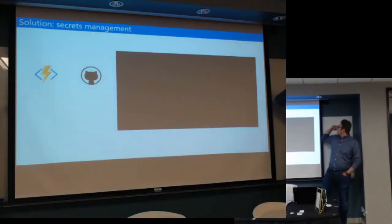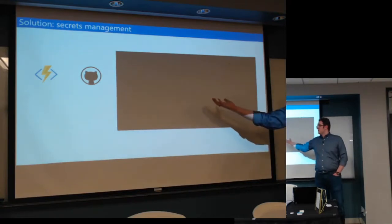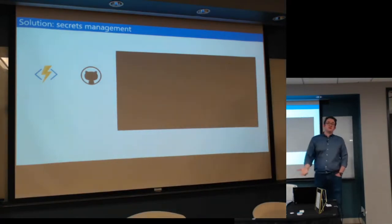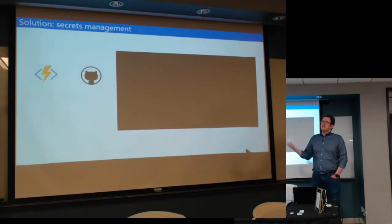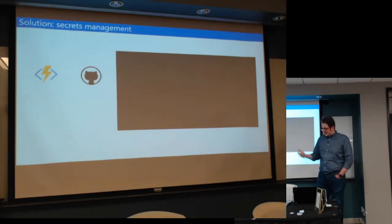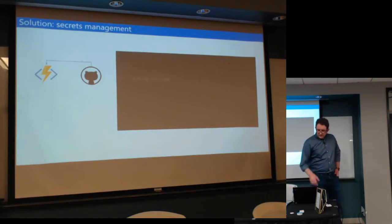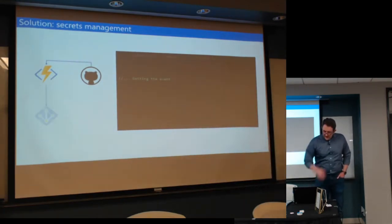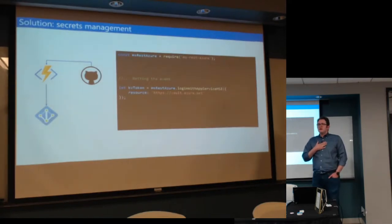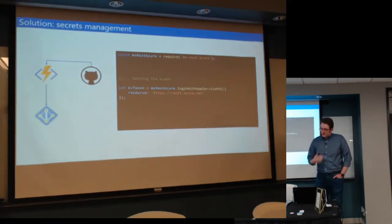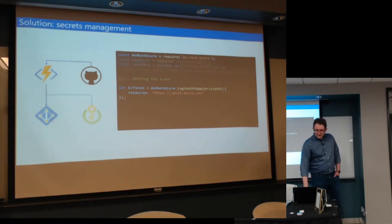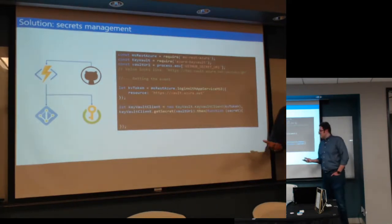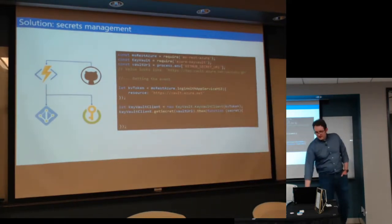One thing we're seeing quite a bit of is secrets management. We want to centralize these things and have rotation policies to deal with them. GitHub may be a contrived example, but we can receive the event from GitHub, go get some identity token — a credential that allows us to talk to a secret store — actually call into that secret store, fetch the GitHub secret, and then handle things. It's actually not that much code. There's even a shorter version of this.